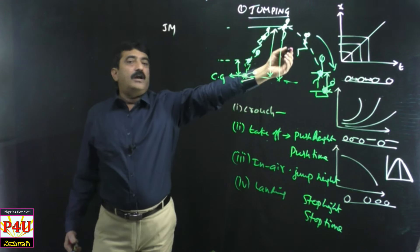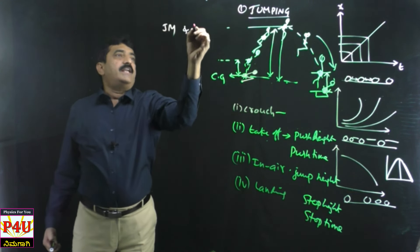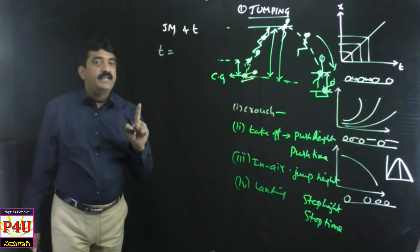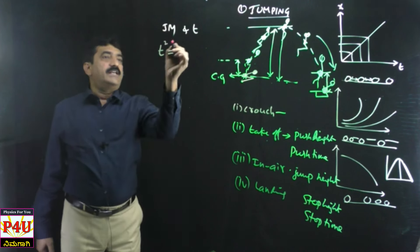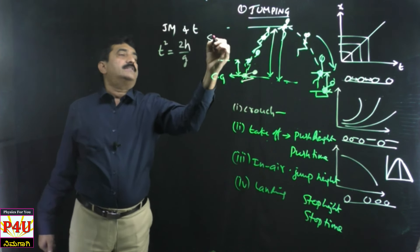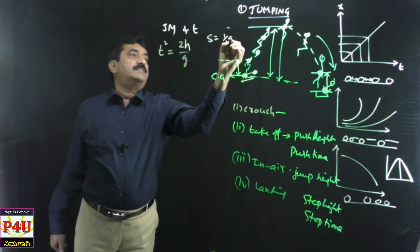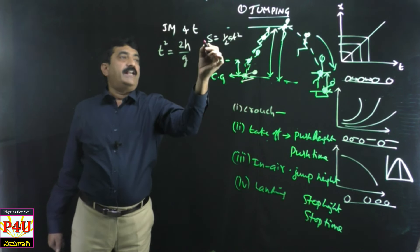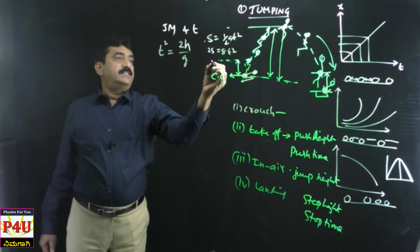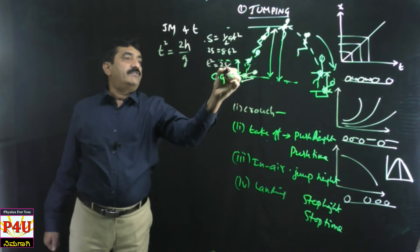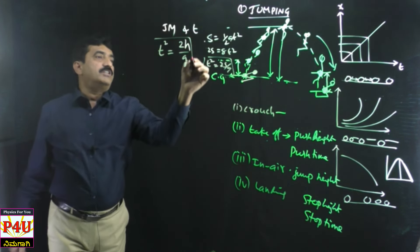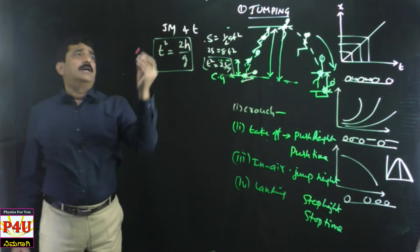Now I calculate the time of ascent t. Using s = ½at², where s is the jump height h: t² = 2h/g, giving t = √(2h/g). Recall s = ut + ½at²; rearranging gives t² = 2s/g, and substituting s = h gives the time formula.